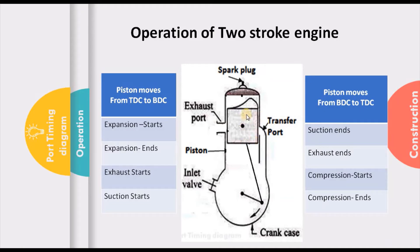As the piston moves from BDC to TDC, initially the transfer port is closing, so suction ends. Then the exhaust port closes and exhaust ends. From that location your effective compression starts and continues until the piston reaches TDC. So in summary: when the piston moves down — expansion, then exhaust, then suction. At BDC both exhaust and suction are ongoing. Moving up, transfer port closes ending suction, exhaust port closes ending exhaust, and then compression occurs until TDC. This is how a two-stroke engine works.